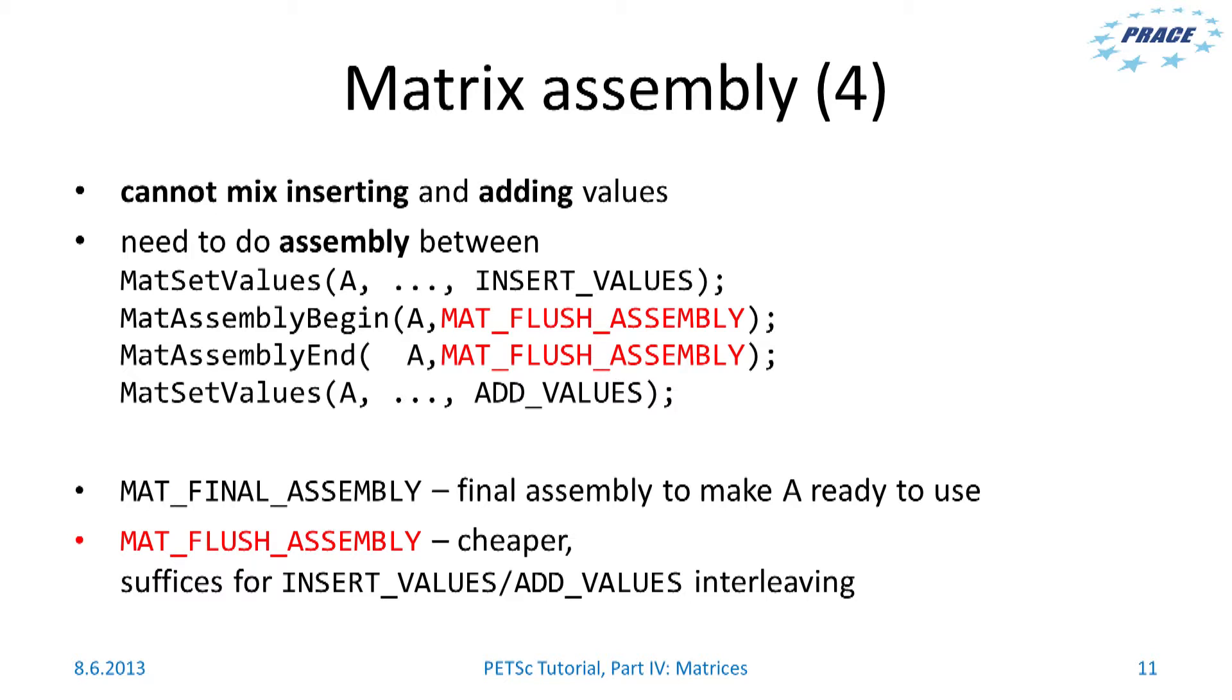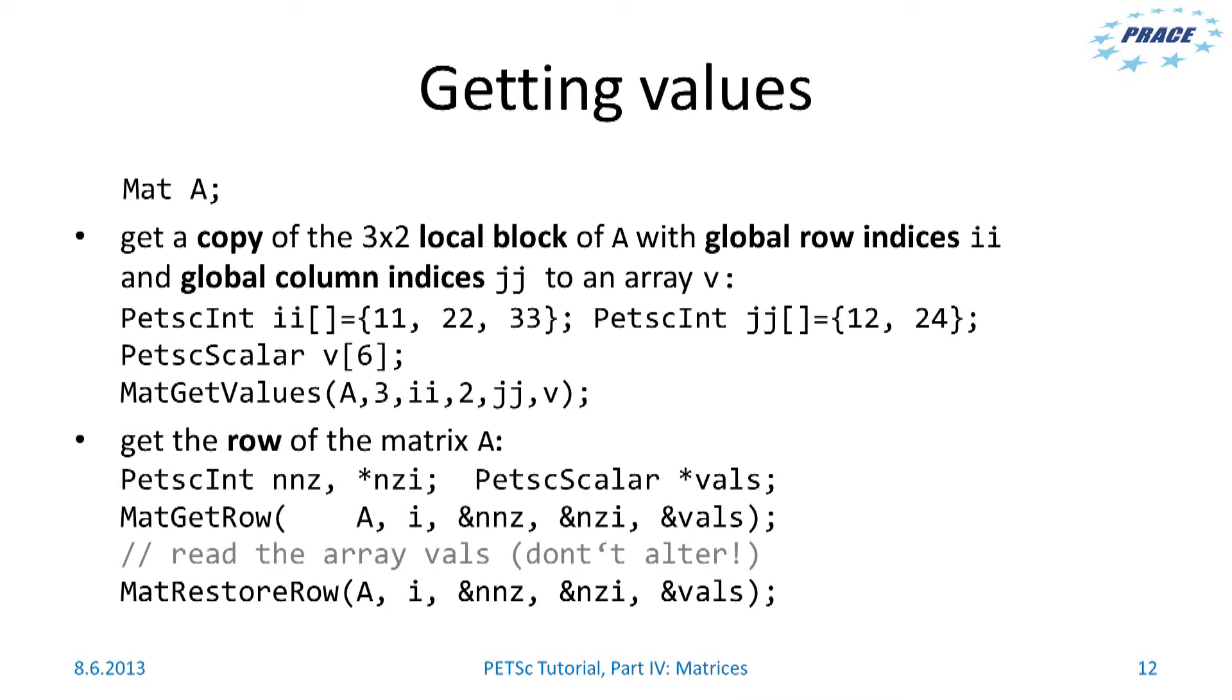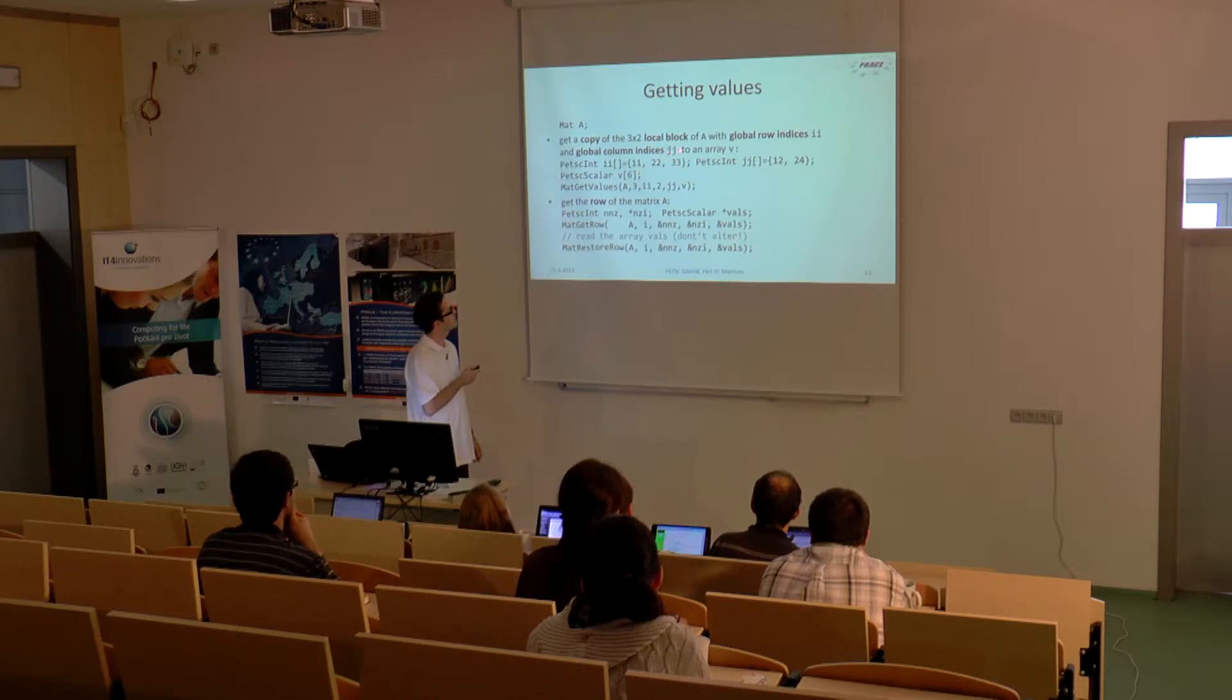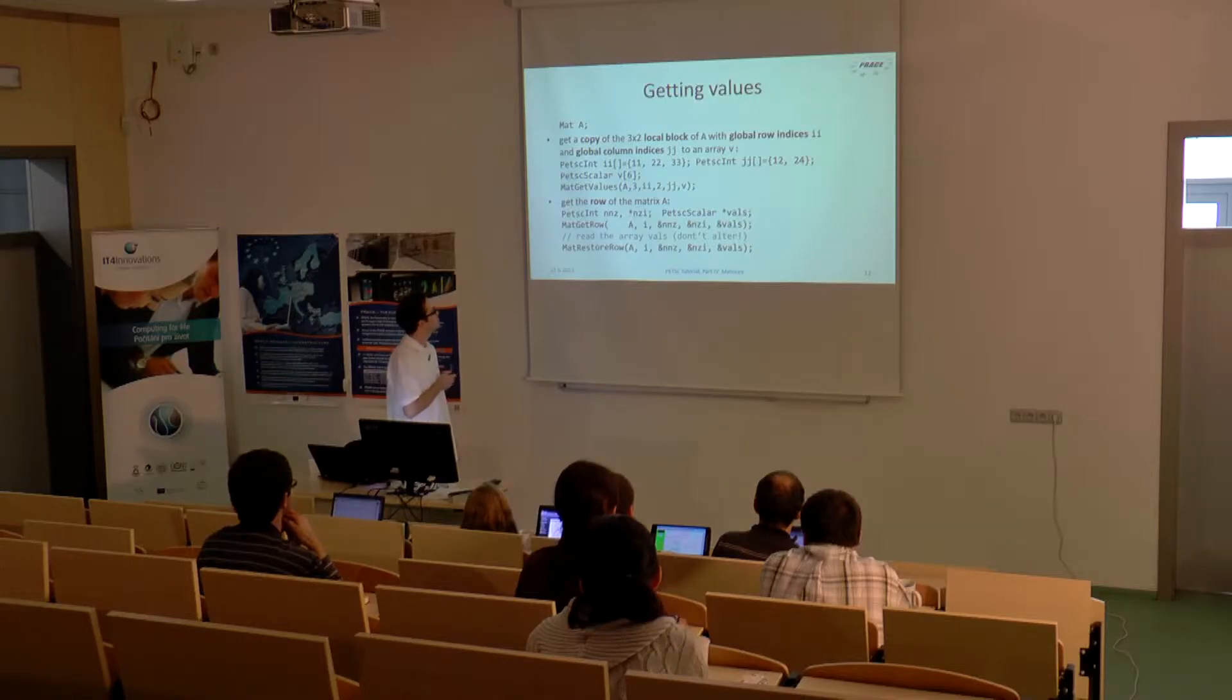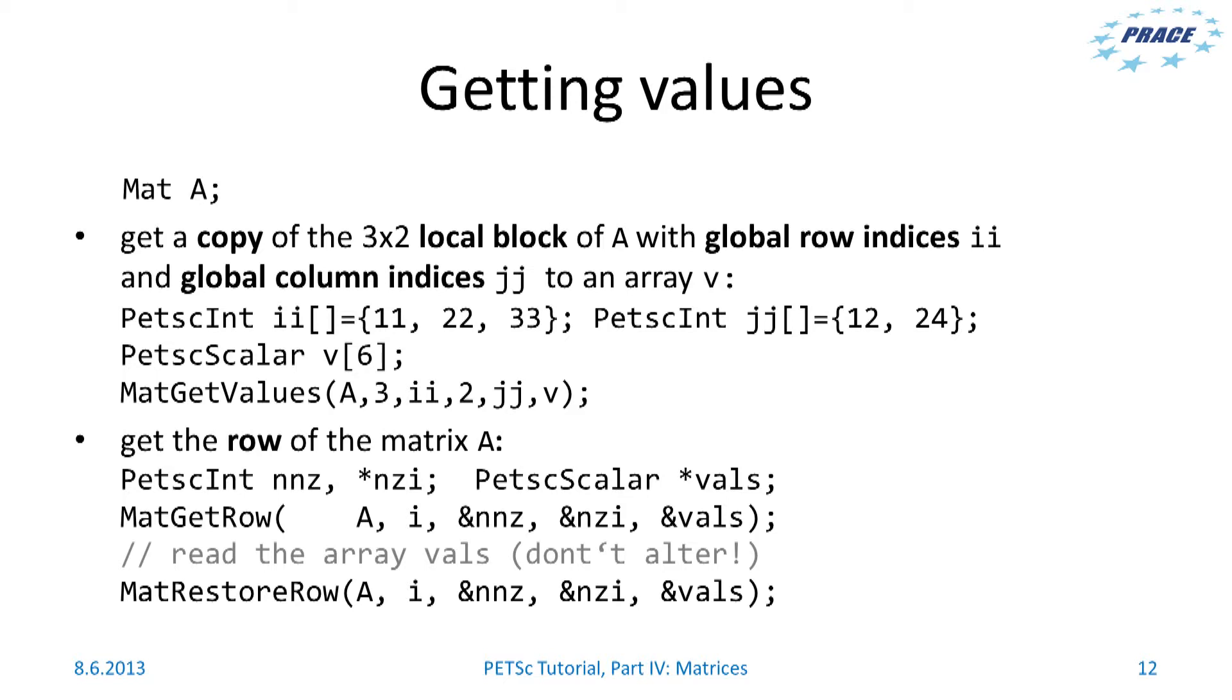When you have your final matrix called the assembly functions, you can then also get the values from the matrix using MatGetValues or for instance MatGetRow. MatGetValues again gets a copy of the values. As I said, it is a logically two-dimensional local block with global row indices ii and global column indices jj. In this case the value array will actually have six entries. If you want to iterate over the rows of matrix, you can call MatGetRow and MatGetRow pair. But unlike in case of vectors, here you can only read the array values but don't alter it.